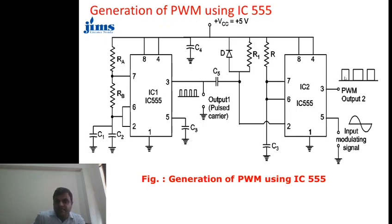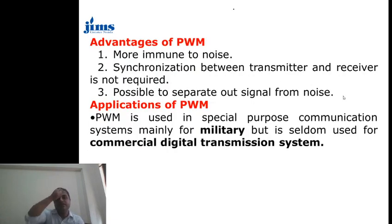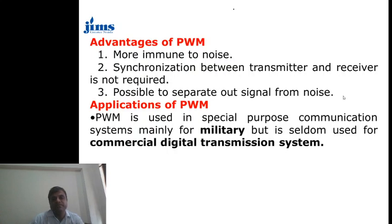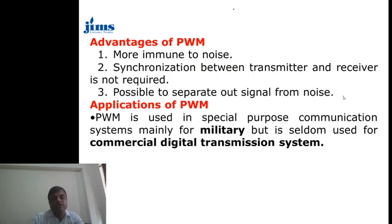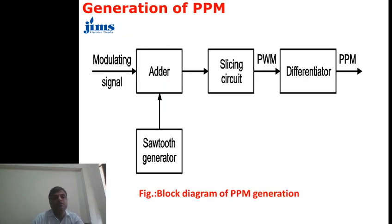The width determined by the integrator decides the width of the output pulse, and we get a pulse width modulated output. The advantage of the pulse width modulation system is that it is more immune to noise compared to pulse amplitude modulation. Synchronization is easy, and generally it is possible to separate the signal from noise. The application of pulse width modulation is mainly in special-purpose communication systems, particularly in military operations, and it is rarely used in commercial digital transmission systems.